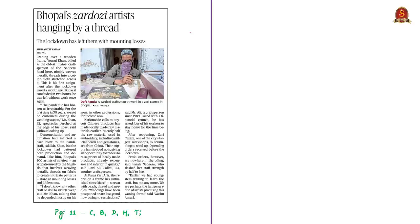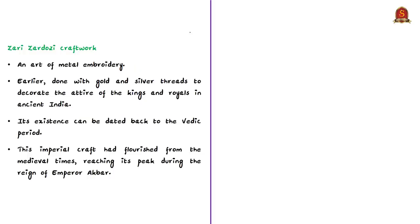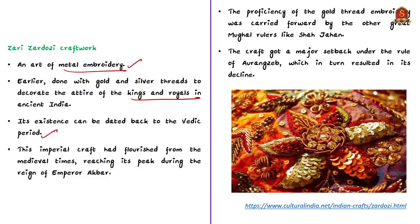Let us take up the next news article, which mentions the plight of Bhopal's Zardosi artisans. In this context, let us discuss the Zardosi or Zari Zardosi craftwork. Know that it is an art of metal embroidery. In the ancient period, gold and silver threads were used in this craftwork to decorate the attire of kings and royals. The existence of this work can be dated back to the Vedic period, but it was only during the medieval era when this craftwork played a significant role during Mughal rulers. This craftwork reached its peak during the reign of Emperor Akbar.